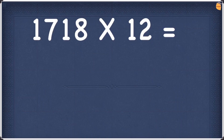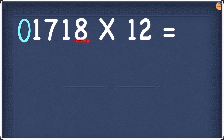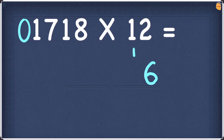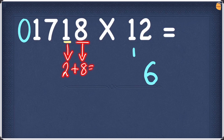Next example is 1718 times 12. Before we do anything, add a 0 in front of 1718. Double 8 gives 16. We don't have a number on the right hand side, so 16 plus 0 is 16. Write the 6 and take the 1 as a carry. Next digit is 1. Doubling 1 gives 2. Add this to the right hand side number, which is 8. 2 plus 8 is 10. Write a 0 and take the 1 as a carry.